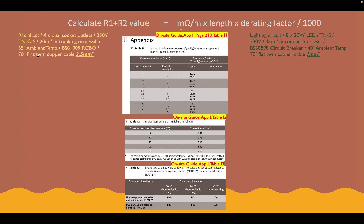Let's start with our radial circuit. We need to select our milliohms per metre value, length, and de-rating factor. We've got a 2.5mm cable, and as standard we're going to go for a 1.5mm protective conductor. So 2.5mm line conductor with a 1.5mm protective conductor gives us a value of 19.51 milliohms per metre for that circuit. Our length for this circuit is 20 metres.